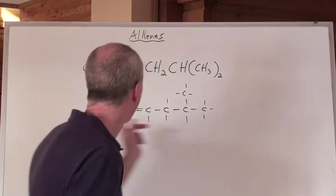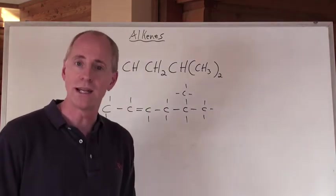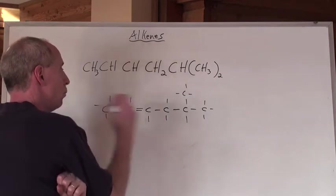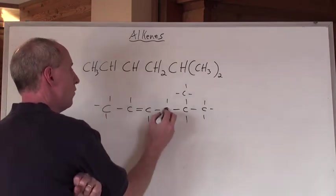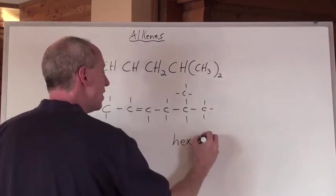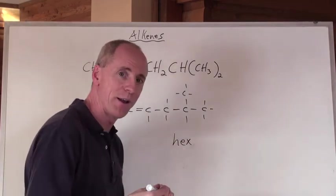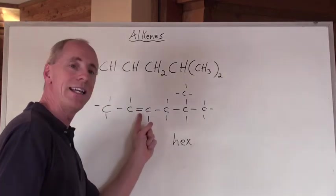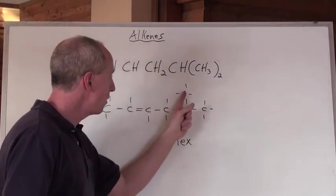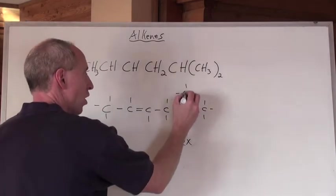So now we name this molecule right here. So how do you do that? Well we've got a longest chain of one, two, three, four, five, six. So it's a hex. And it's got a double bond in it, so it's an 'ene'. Now here's the thing. Where is that 'ene'? It's at the second carbon.